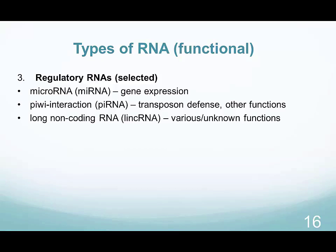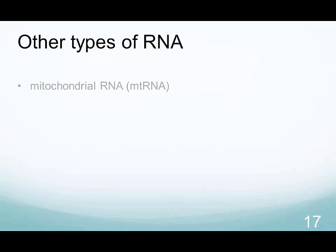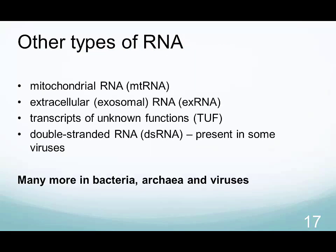The above classification of RNA is quite conventional, as there are many more types of RNA with important functions that we either don't understand entirely or just don't know exactly what they do. Some other types of RNA include mitochondrial RNA, exosomal transcripts of unknown functions or TUF, and double-stranded RNA in viruses. With advancement of research technologies, the repertoire of RNA will most likely expand. In addition, we have a wide variety of RNA in lower organisms.